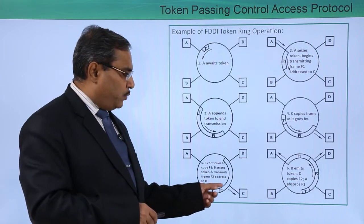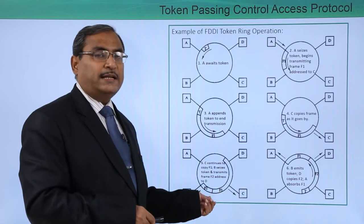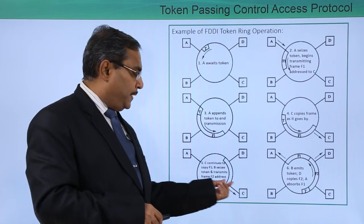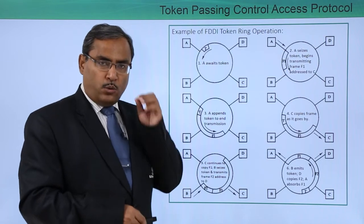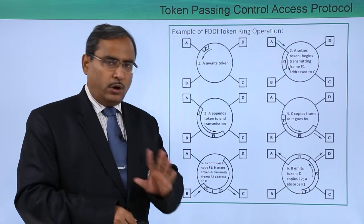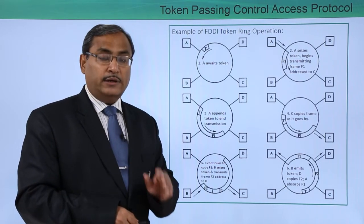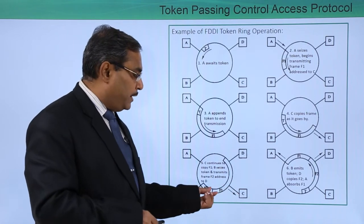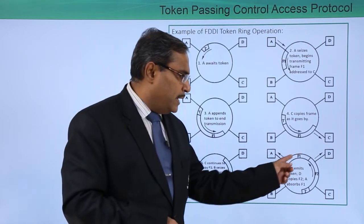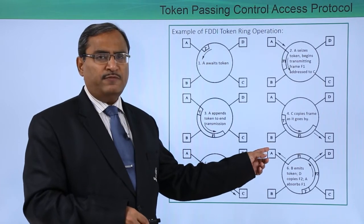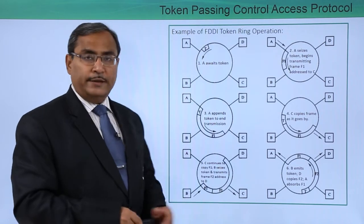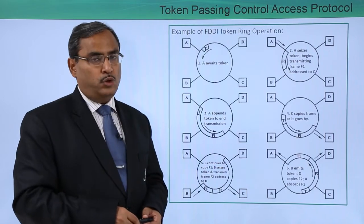When this particular frame was passing in front of C, there is a field known as frame status. C will keep its status update in that field to indicate whether it got a corrupted frame that should be resent, or no corruption and it received the original frame correctly, or it received a partially corrupted frame. That feedback will be written by C in the field known as frame status. When that frame is absorbed by A, the originator of F1, A will read the frame status and accordingly get the status update. In this way the FDDI token ring operation works.